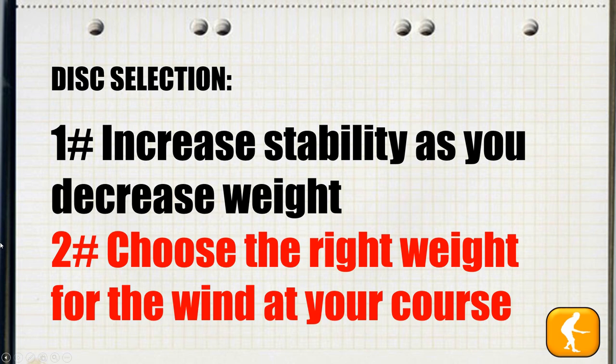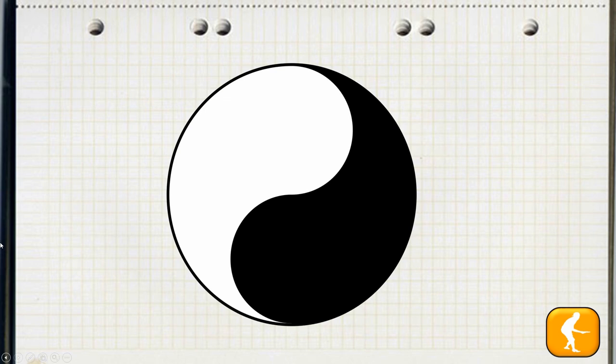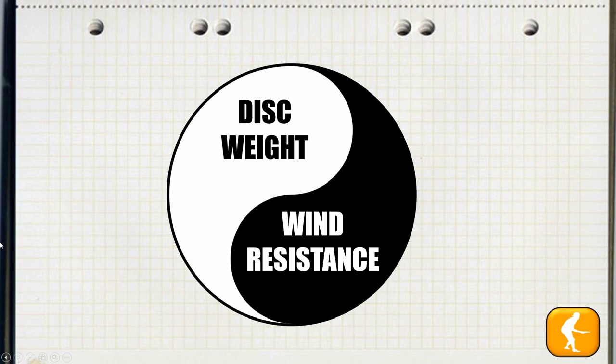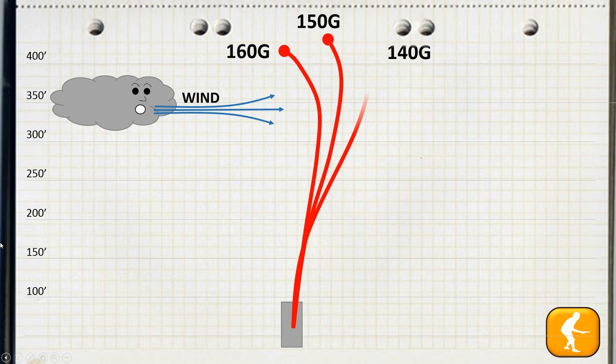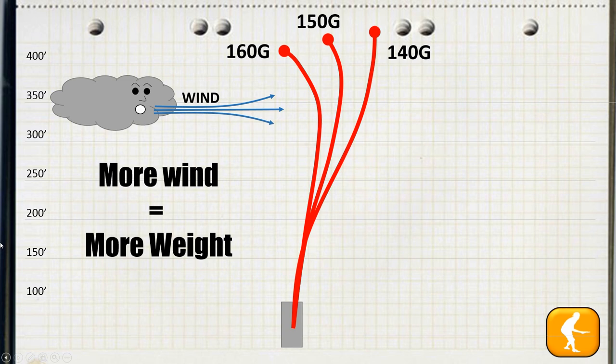So for disc selection we have two main points. Number one: increase stability as you decrease weight. And number two: choose the right weight for the wind at your course. Because almost everything in disc selection is a trade-off, the trade-off for disc weight is wind resistance. Less disc weight equals less resistance to the wind. If the flight of a 160 gram disc with a cross breeze looks like this, the flight of a 150 gram disc in that same breeze is going to look something more like this — pushed off further to the right — and with a 140 gram disc, even further to the right. When you're selecting your discs, more wind equals more weight needed to compensate. You may be giving up a little distance, but ultimately you're going to get a much straighter throw and a net better result.